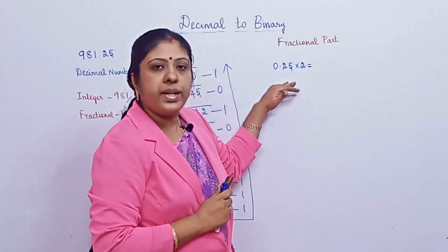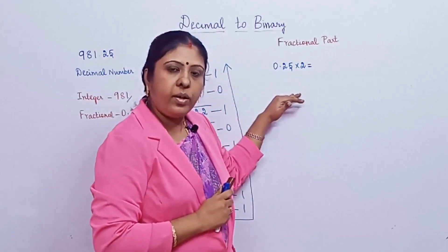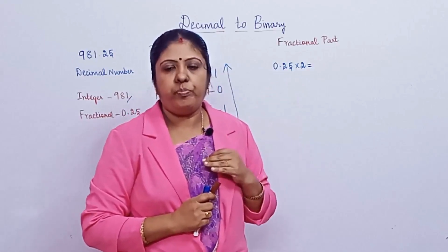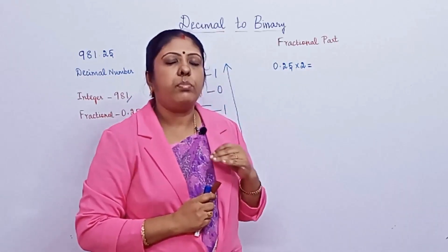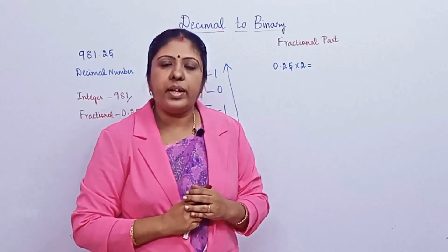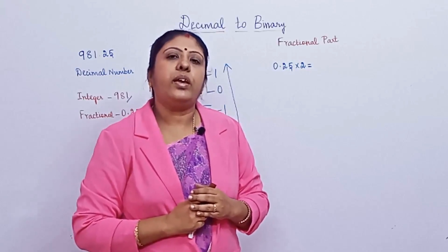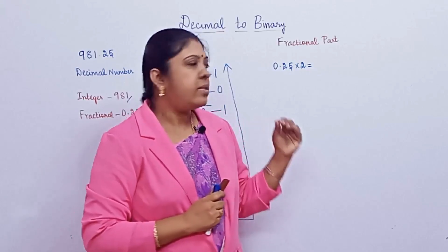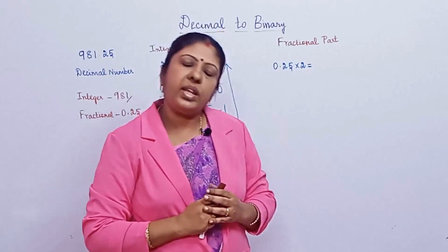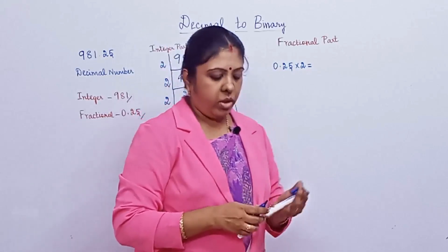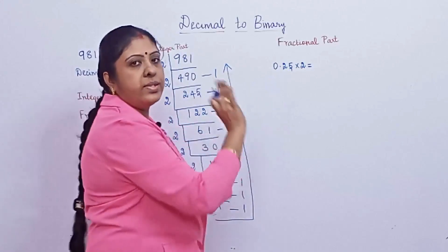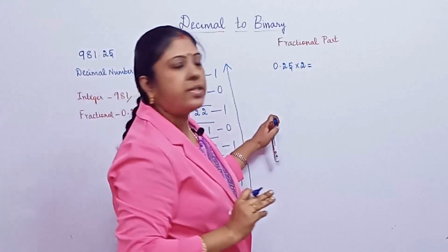For some numbers, the fractional part reaches 0 in one or two steps. For others, it may never reach 0, in which case we stop at a minimum of 3 iterations. Now, 0.25 is the given fractional part.